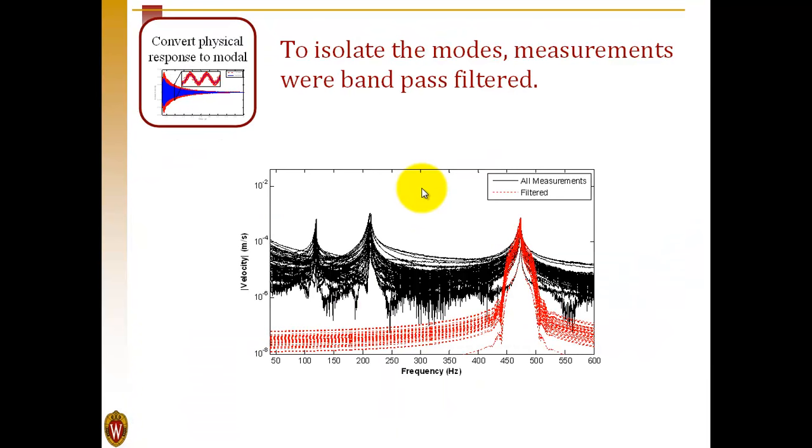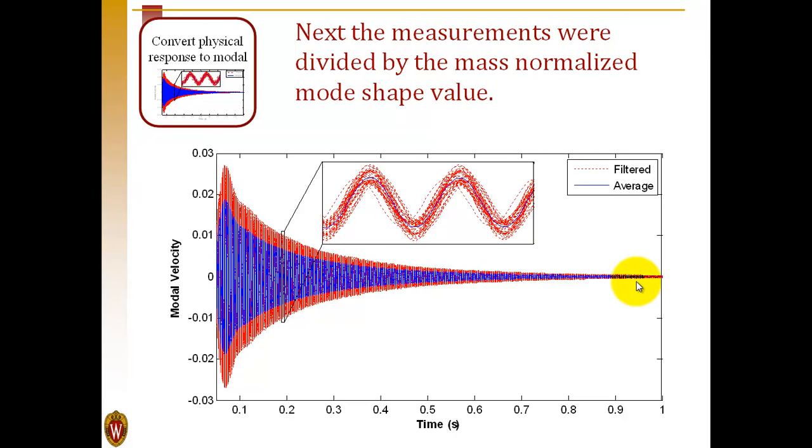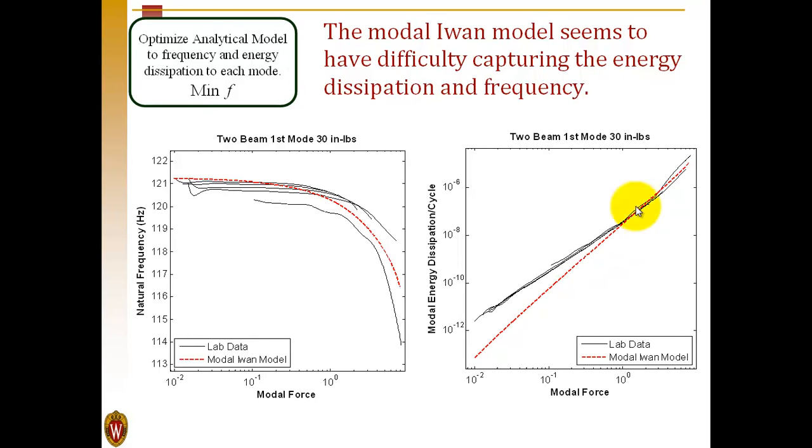Here, because the structure is excited at one point, the responses had to be filtered to isolate each mode. We used a bandpass filter to isolate one mode. The red curves are all the different velocity responses at different points on the structure. We can take all of those, divide by the mode shape at each point on the structure to estimate modal amplitude for each of the modes. We'll focus on only the first three modes, and those were averaged and fit to a modal IWAN model.